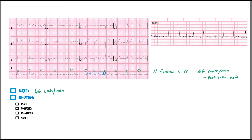This is definitely an irregular rhythm. Remember: usually if it is irregular, it's almost always AFib. There might be rare cases like multifocal atrial tachycardia, or an ectopic rhythm with aberrant conduction like PACs and PVCs, but usually it's AFib most commonly.